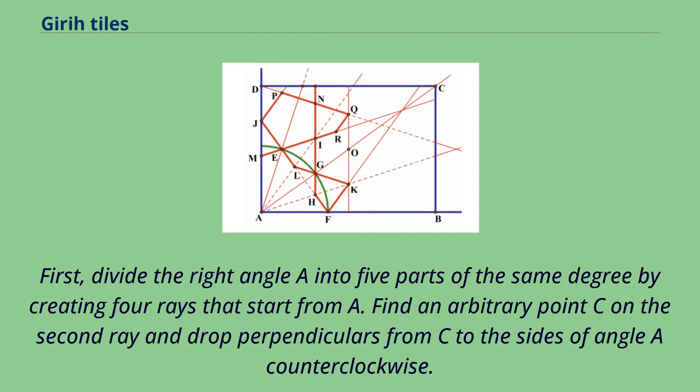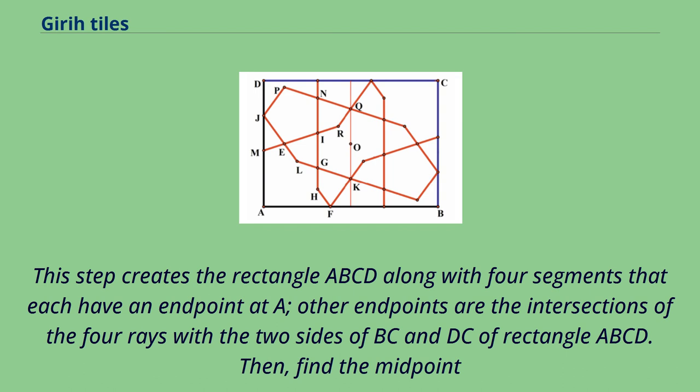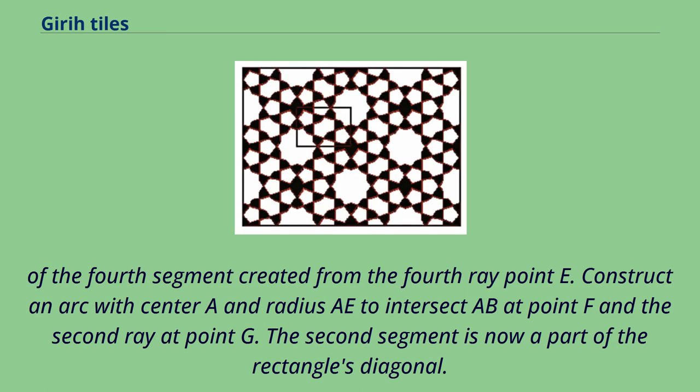First divide the right angle A into five parts of the same degree by creating four rays that start from A. Find an arbitrary point C on the second ray and drop perpendiculars from C to the sides of angle A. This step creates the rectangle ABCD along with four segments that each have an endpoint at A. Then find the midpoint of the fourth segment created from the fourth ray, point E.